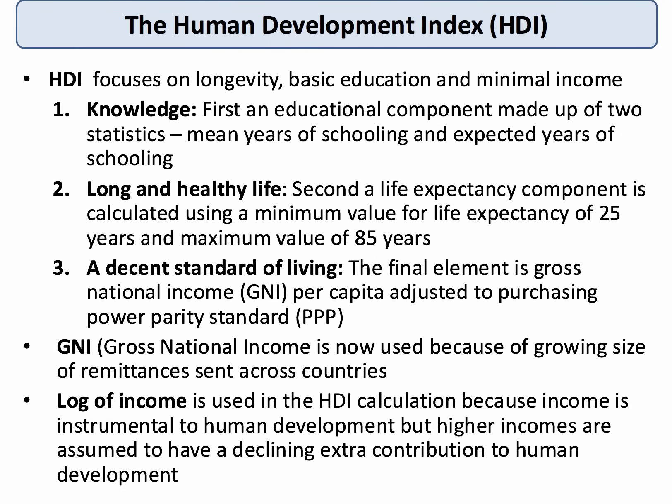The knowledge component has an educational aspect made up of mean years of schooling and expected years of schooling at primary and secondary level. The health aspect includes a minimum value for life expectancy of 25 years and a maximum of 85. The third aspect is income per capita — specifically gross national income per head of population, measured in US dollars and adjusted for purchasing power parity. Each of the three components carries an equal 33% weighting.